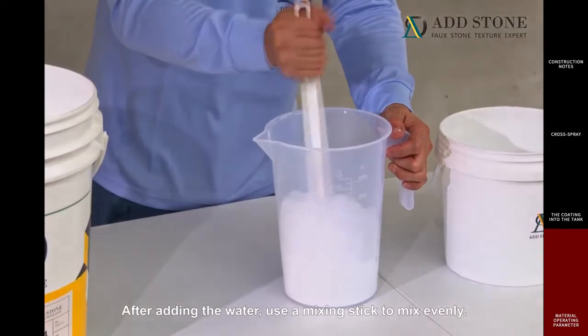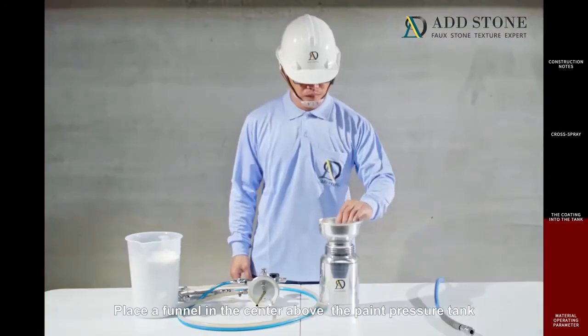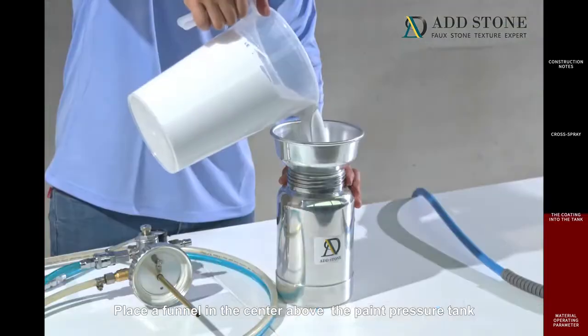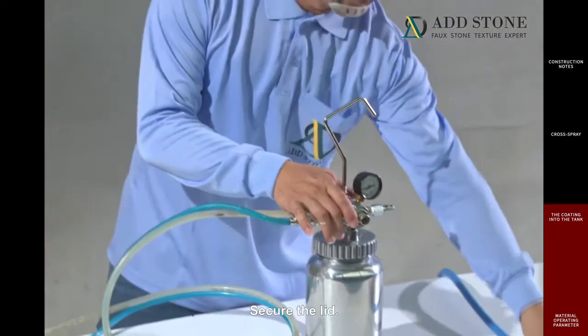After adding the water, use a mixing stick to mix evenly. Place a funnel in the center above the paint pressure tank to pour the coating into the tank easily. Secure the lid.